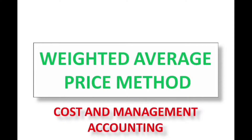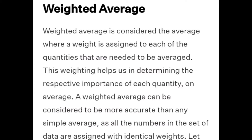The Weighted Average Price Method considers the average where a weight is assigned to each of the quantities to be averaged. This weighting helps in determining the respective importance of each quantity on average. A weighted average can be considered more accurate than a simple average, as all numbers in the data set are assigned with identical weights.